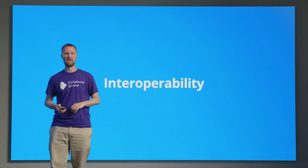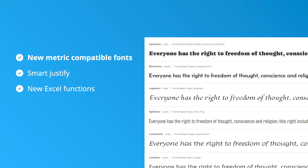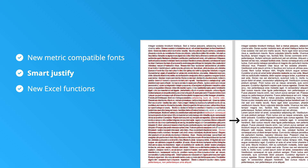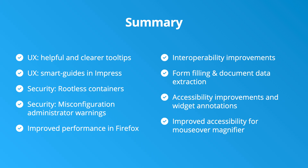Interoperability is something we're constantly working to improve. We're bundling more metric-compatible fonts to make layouts more similar, with improvements in smart justification coming from LibreOffice upstream — a community contribution from Laszlo Nemeth. We've also added new Excel-compatible functions such as FILTER, SORT, SORTBY, and many others.